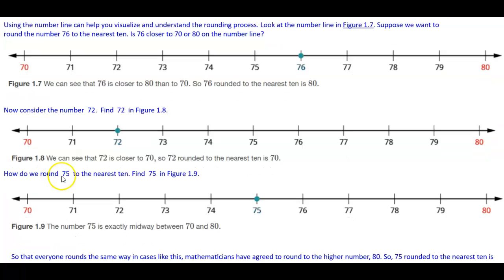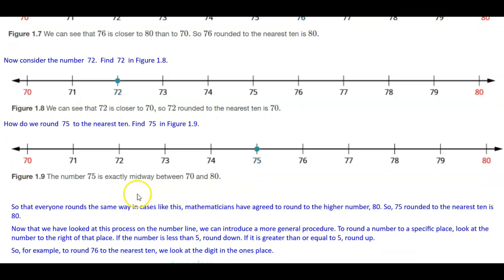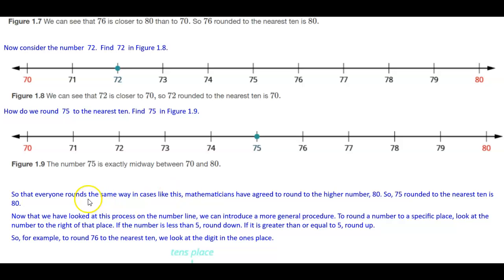Now how do we round 75 to the nearest 10? We find 75 in the figure, and the number 75 is exactly midway between 70 and 80. So that everyone rounds the same way in cases like this, mathematicians have agreed to round to the higher number, 80. So 75 rounded to the nearest 10 is 80.